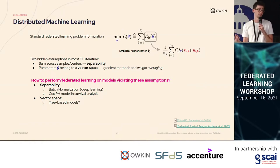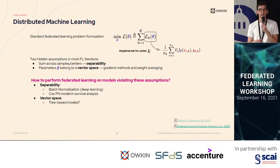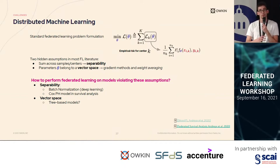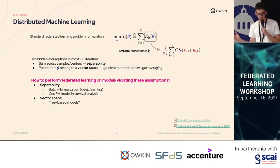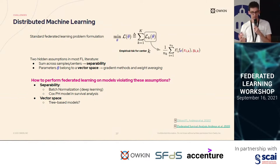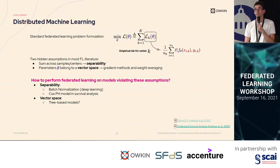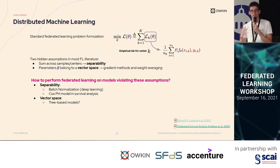Another problem is that since we are interested in biomedical applications, we use a lot of survival analysis and the Cox proportional hazard model. When you look at its loss function, it is also non-separable. Do you make proxies for the loss, or do you try to still compute the full loss? It is not trivial. And a last open question is: how do you handle the case where parameters do not belong to a vector space — in particular for tree-based models, which achieve the best performance on tabular data? This is a challenge we face.